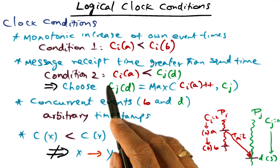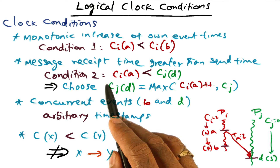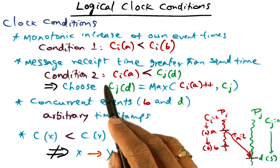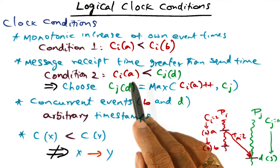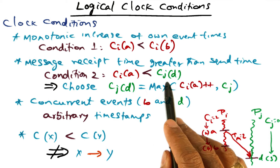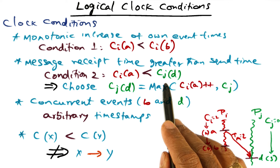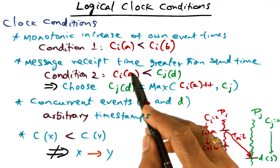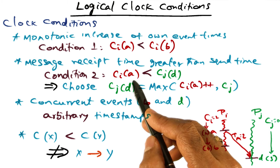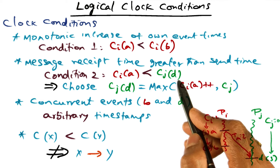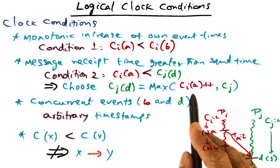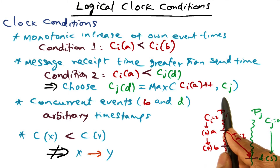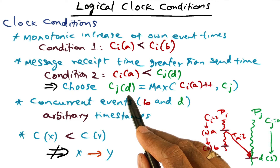The second condition is that when we have a receipt of a message, we want to make sure that the receipt of the message has a time stamp that is greater than the sending time stamp. So if A is the act of sending a message from process I, and D is the act of receiving the same message on process J, the time stamp associated with event A has to be less than the time stamp associated with event D. We choose the time stamp for D as the max of the time stamp seen in the incoming message incremented by some value, and whatever the local counter is saying.